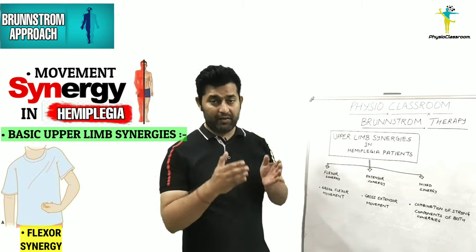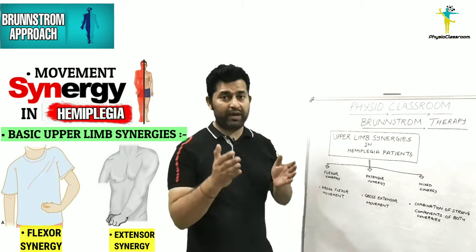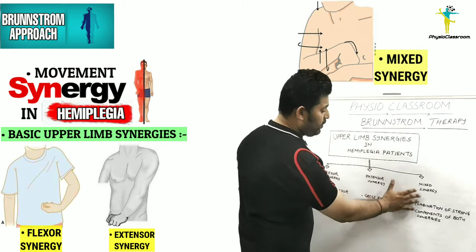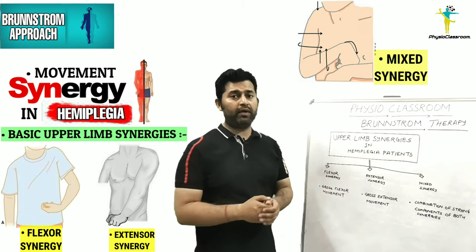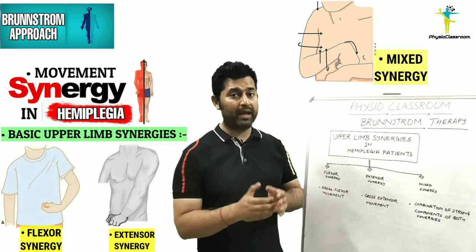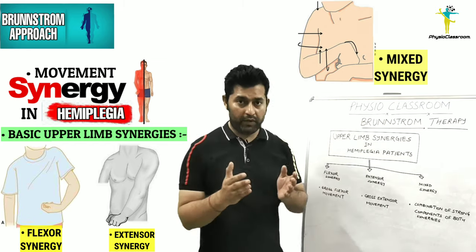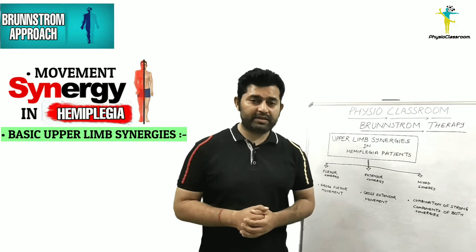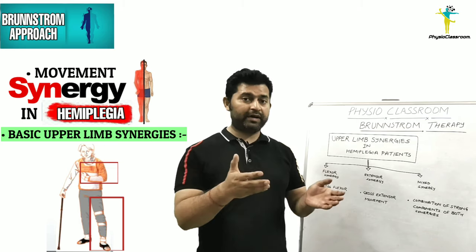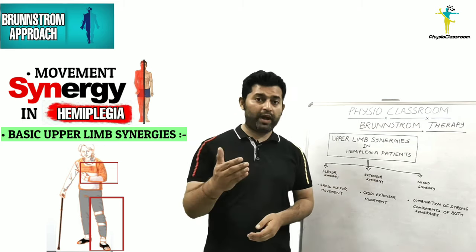The basic upper limb synergies seen in a hemiplegic patient are limited to a gross flexor movement called the flexor synergy, gross extensor movements called the upper limb extensor synergy, and a mixed synergy produced from combining the strong components of both. As soon as flaccidity starts getting replaced by the onset of spasticity, one can expect to see these basic hemiplegic limb synergies appear in stroke patients.